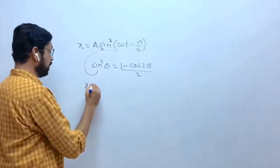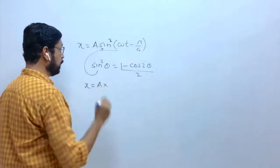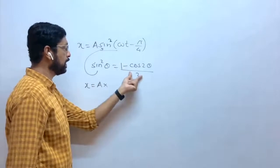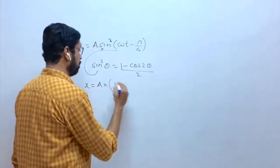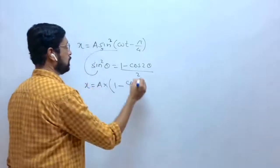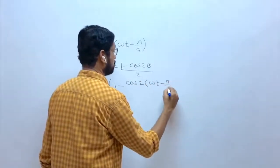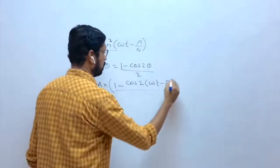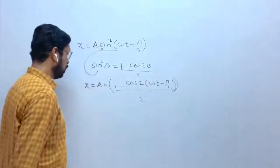Therefore, this equation will become x = A(1 - cos 2θ)/2. In place of sin²θ, we will write (1 - cos 2θ)/2 where θ = ωt - π/4.